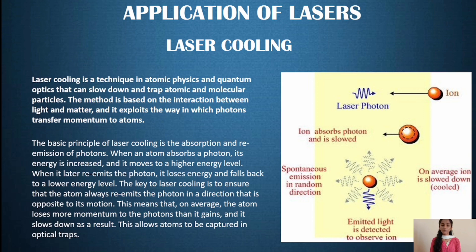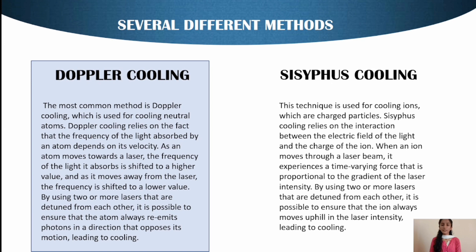When an atom absorbs a photon, its energy is increased and it moves to a higher energy level. When it later re-emits the photon, it loses energy and falls back to a lower energy level. The key to laser cooling is to ensure that the atom always re-emits the photon in a direction that is opposite to its motion. This means that on average the atom loses more momentum to the photons than it gains, and it slows down as a result. This allows atoms to be captured in optical traps.